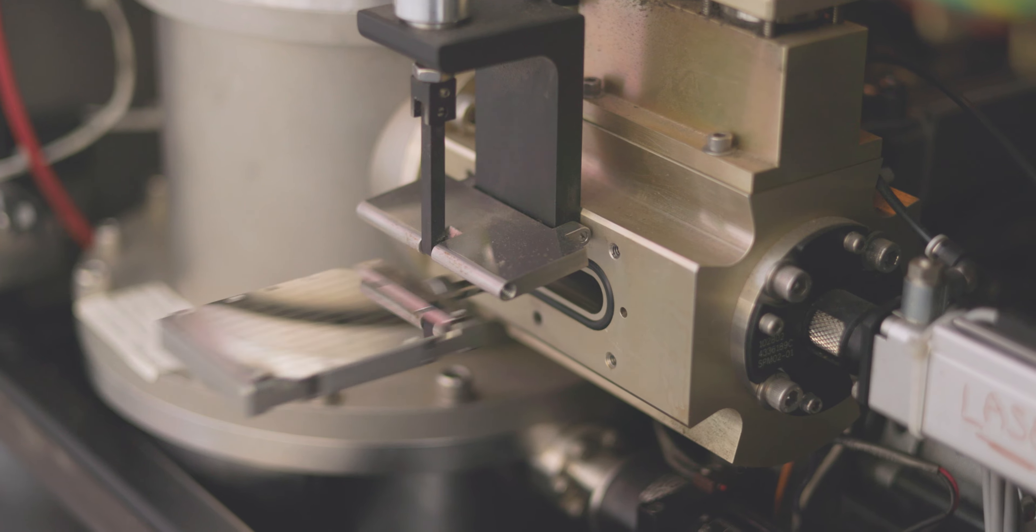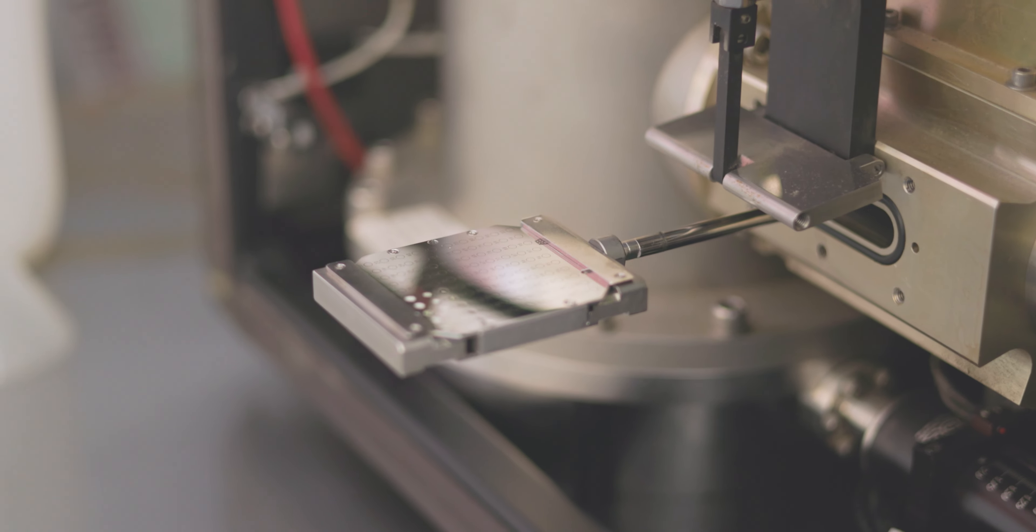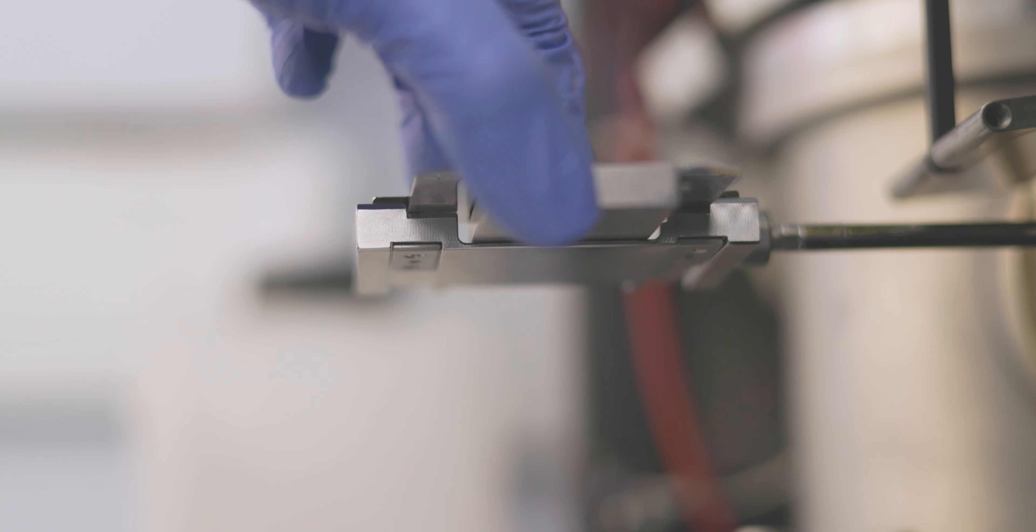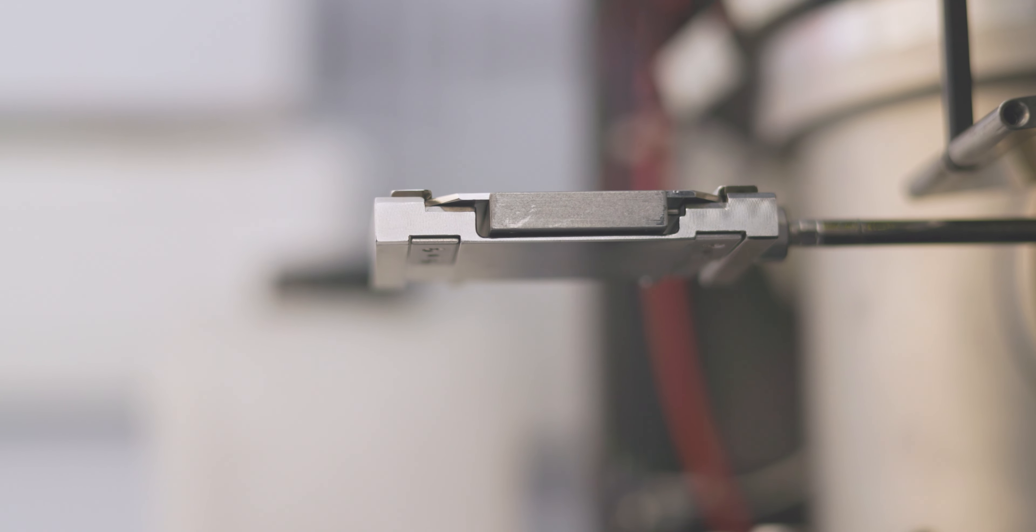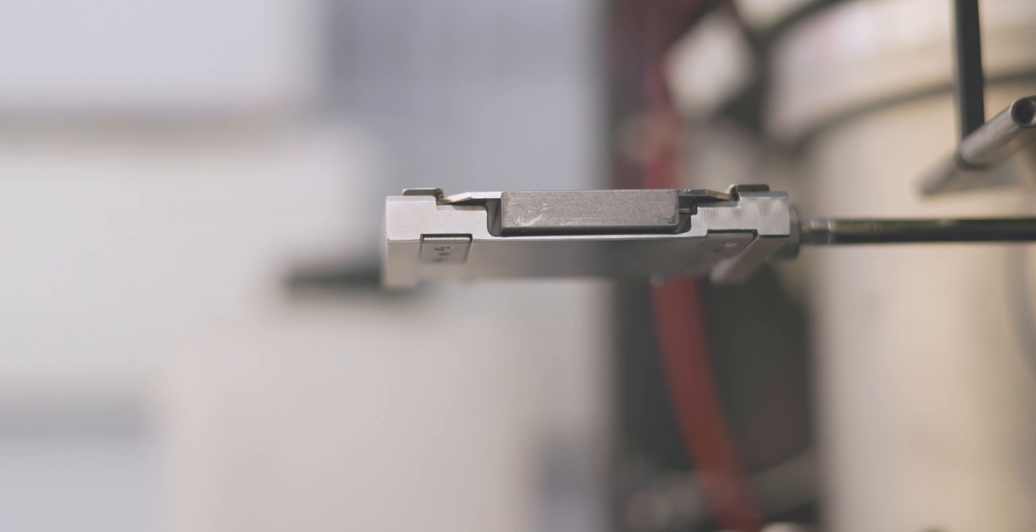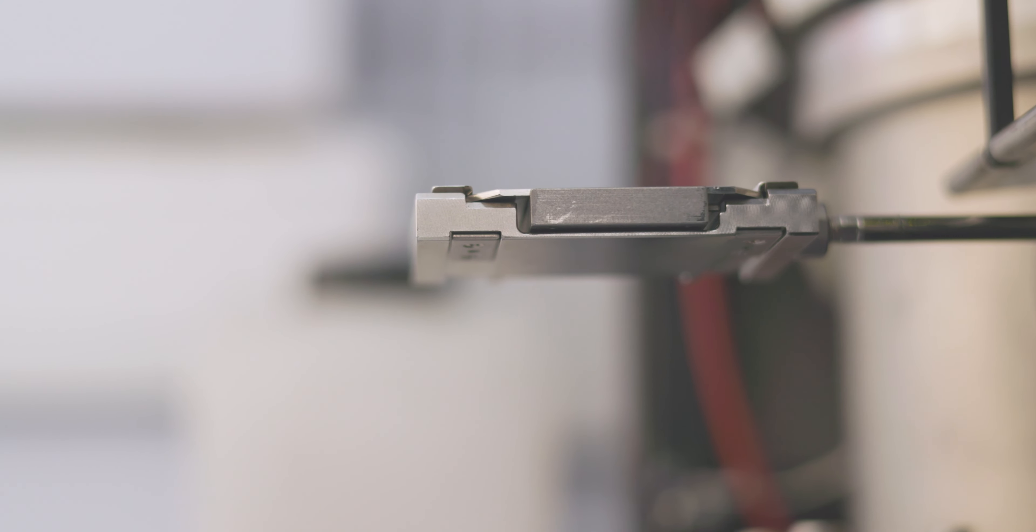We eject the old plate from the machine, the last run sample, and slide in our new plate. This goes into the mass spectrometer, and then it's put under a high vacuum.